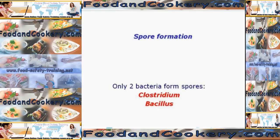Now I want to introduce you to spores, and in particular, spore formation. Only 2 bacteria form spores, and they are Clostridium and Bacillus. We've already met a couple of different types: Clostridium perfringens, Clostridium botulinum, and Bacillus cereus. There are other versions of spores within nature not related to food safety — for example, Bacillus anthracis is the anthrax spore.